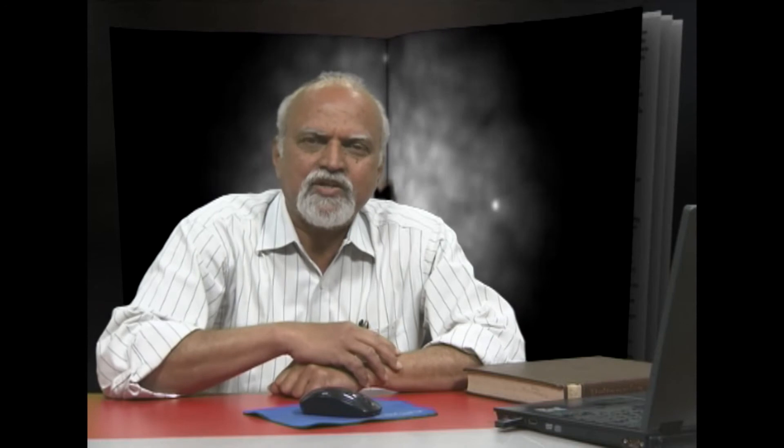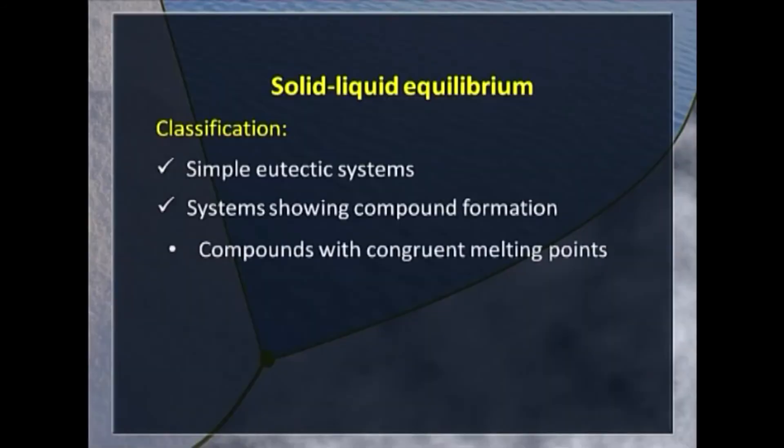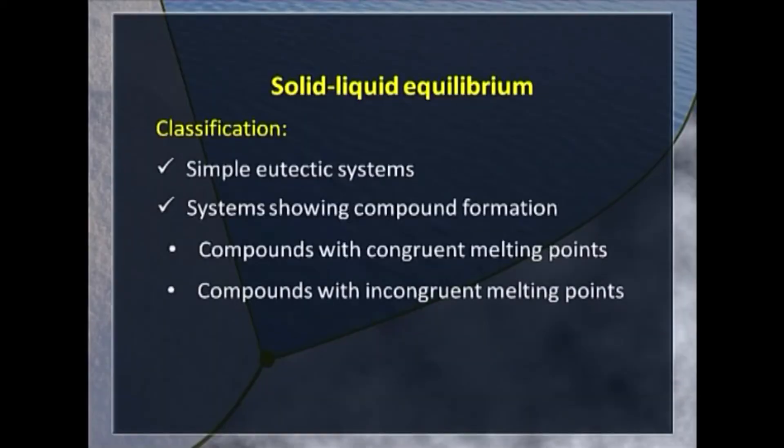We start with systems in which there is no miscibility in the solid state. Otherwise, further complications are added. We will tackle such systems at a later stage. These systems are classified as simple eutectic systems, systems showing compound formation. If there is affinity between the two components, there is a possibility of compound formation, and the compounds may be stable or may not be stable. We deal with systems in which the compounds show congruent melting points and then look at what happens if the compound is not stable, that is compounds exhibiting incongruent melting points.